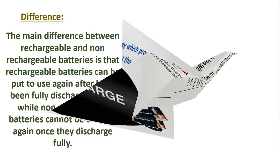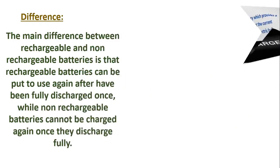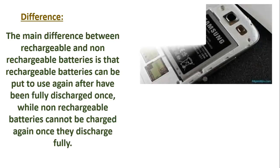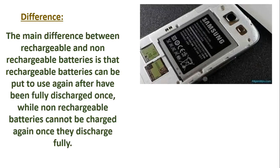So how are they different? The difference is that rechargeable batteries can be put to use again after they have been fully discharged, while non-rechargeable batteries cannot be charged again once they are fully discharged. For example, the battery of your mobile phone is a great example of a rechargeable battery — you charge your mobile and it starts working again and again. But non-rechargeable batteries have to be discarded; they cannot be used again.